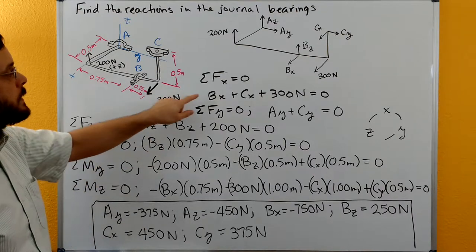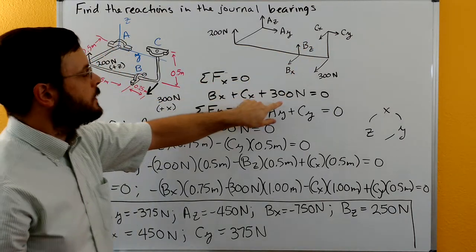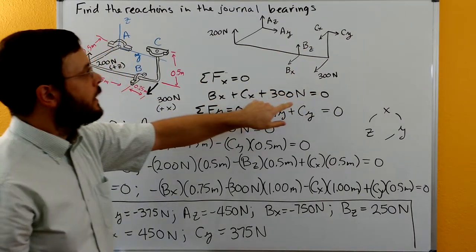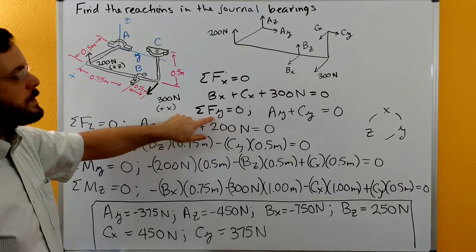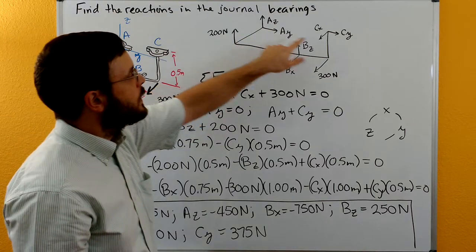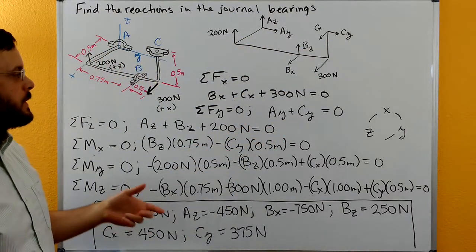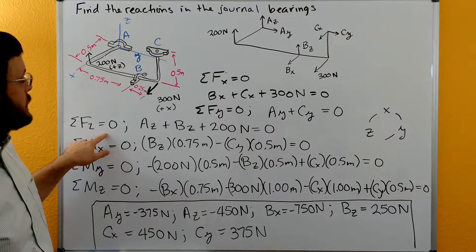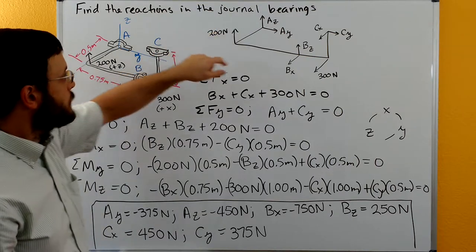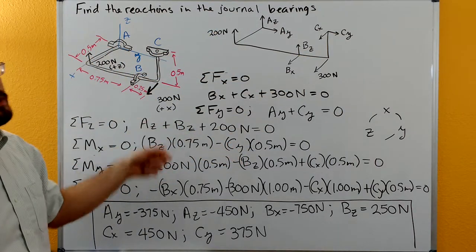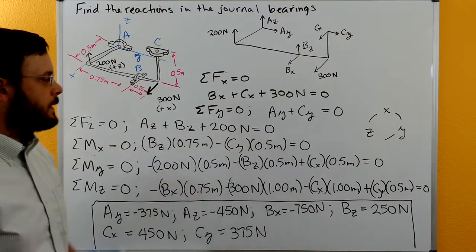Going through and solving: sum of forces in x gives us CX, BX, and the 300 newton force all in the positive x direction, summing to zero. Sum of forces in y gives AY and CY both in the positive y direction, summing to zero. Sum of forces in z gives AZ, the 200 newtons, and BZ all in the positive z direction, summing to zero.